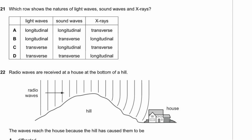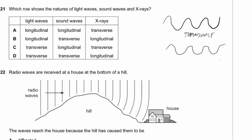Question 21. Light waves are transverse waves. X-rays are also transverse waves, just with a much shorter wavelength. Sound waves are longitudinal waves — the molecules move in the same direction as the wave propagation. So light: transverse, sound: longitudinal, x-rays: transverse. The answer is C.